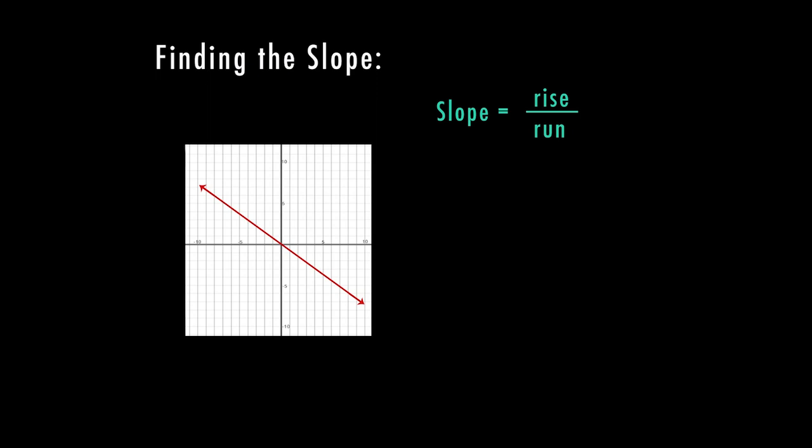So I'm going to find a couple of points on this graph. You can choose any two points on the graph, it does not matter. So I'm going to go with this point right here, so it's pretty easy to see. And I'm just going to go with this one, the origin, because I can tell that it goes through zero, zero.